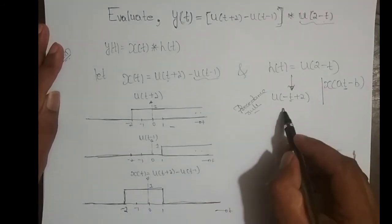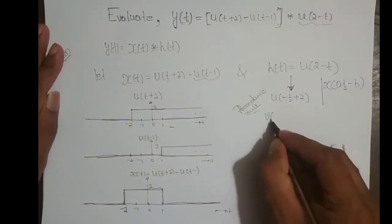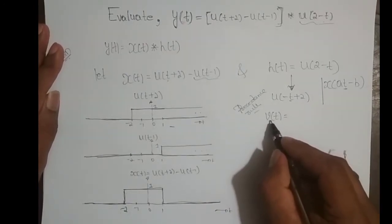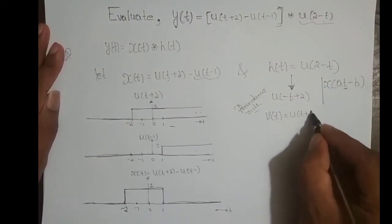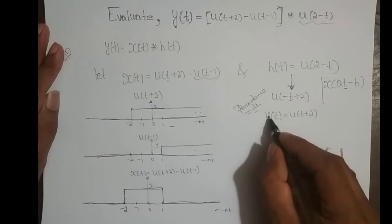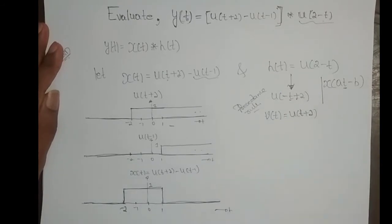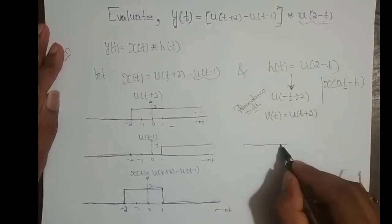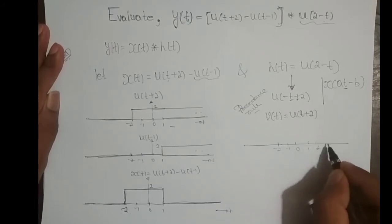The precedence rule says: whenever the signal involves both time scaling and time shifting, I have to first perform the time shifting operation on an intermediate signal v(t). This v(t) has only the time shifting part, which is u(t+2). While shifting, ignore the scaling — I concentrate only on the shifting part, which is +2, giving t+2. Call it intermediate signal v(t).